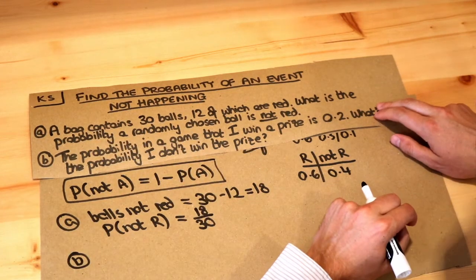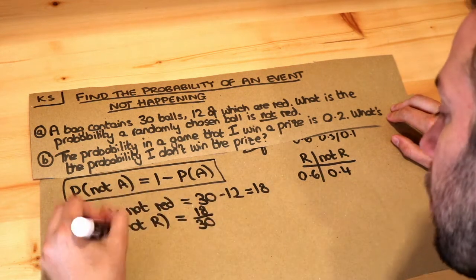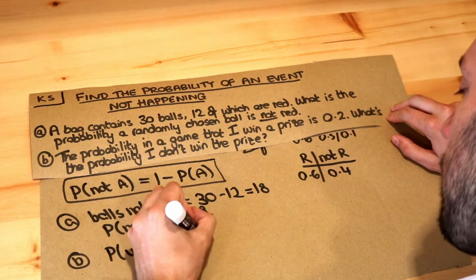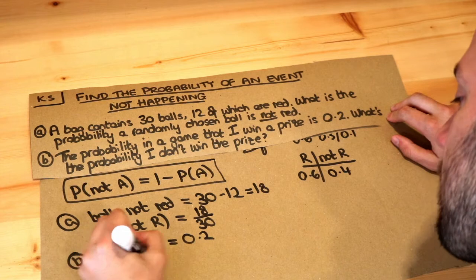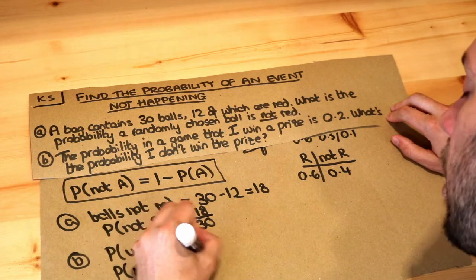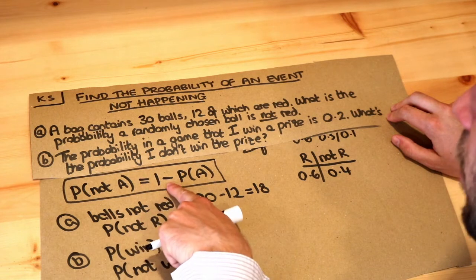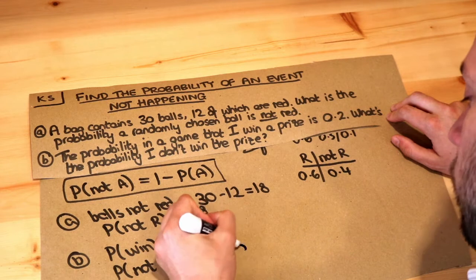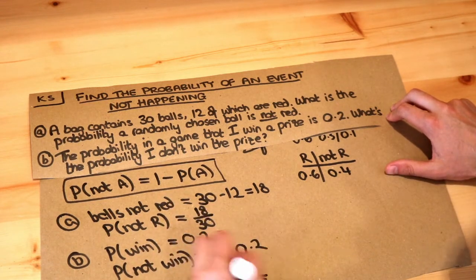The probability in a game that I win a prize is 0.2. What's the probability I don't win the prize? So the probability that you win the prize is 0.2. Then what's the probability that you do not win? Well, according to this formula, the probability that you don't win is equal to 1 minus the probability you win. So it's just 1 minus 0.2, and that would be equal to 0.8.